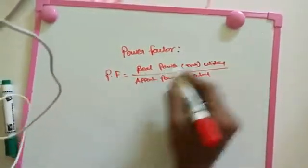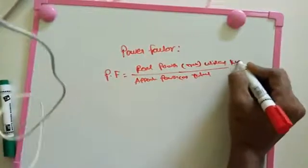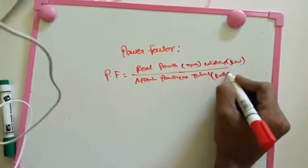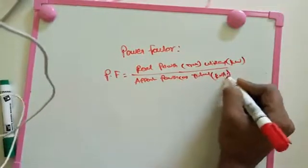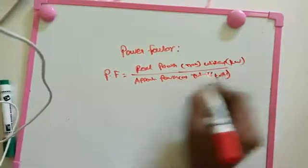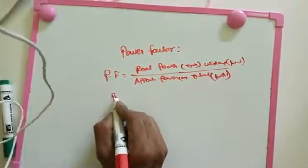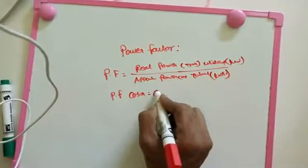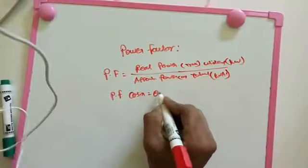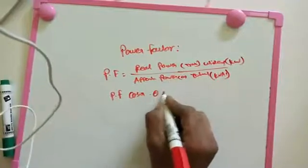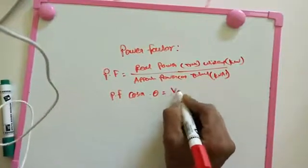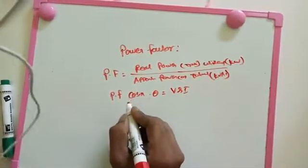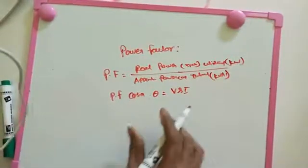Real power is measured in kW (kilowatts). Apparent power is measured in kVA (kilovolt-ampere). The power factor angle is the cosine of the angle between voltage and current — that is called the power factor angle.